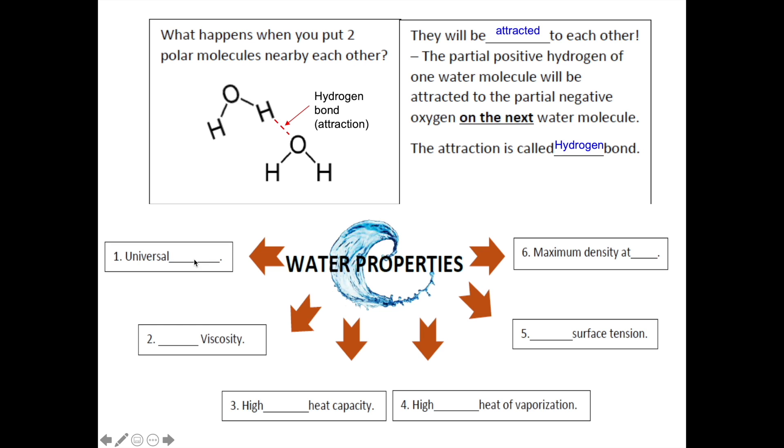There are six properties of water. First one being water acting as universal solvent, water has a low viscosity, water has high specific heat capacity, water has high latent heat of vaporization, water has high surface tension, and water has maximum density at 4 degrees Celsius. We will look at each of the water properties in detail together with its importance.